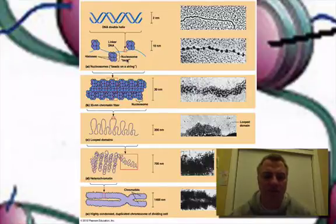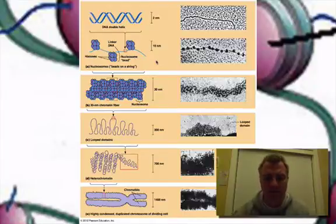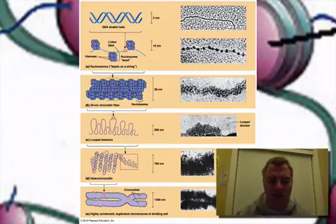Together with the DNA and the histones, they form a structure called a nucleosome — it's kind of like a bead on a string, if you'll notice in this picture. Zooming out a little bit, you'll notice how each one of these nucleosomes packs in together. This is called the 30nm chromatin fiber.